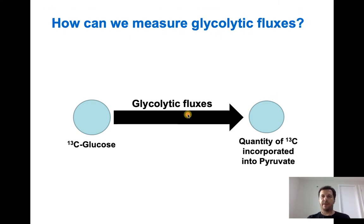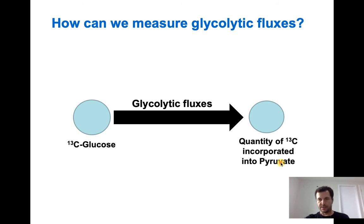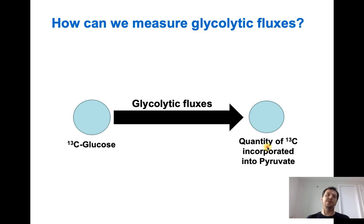This practically answers the second question: how can we measure glycolytic fluxes? Glycolysis starts with glucose, so you use labeled glucose and measure the incorporation into intermediates — for example, pyruvate, which is the end product of glycolysis. Measuring this over time shows how glycolytic fluxes are increasing or decreasing.